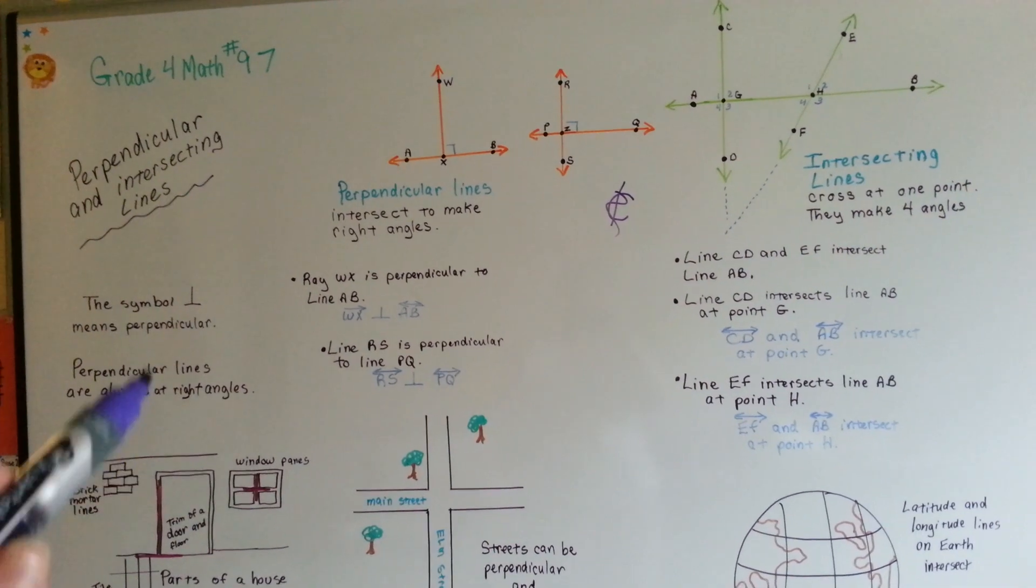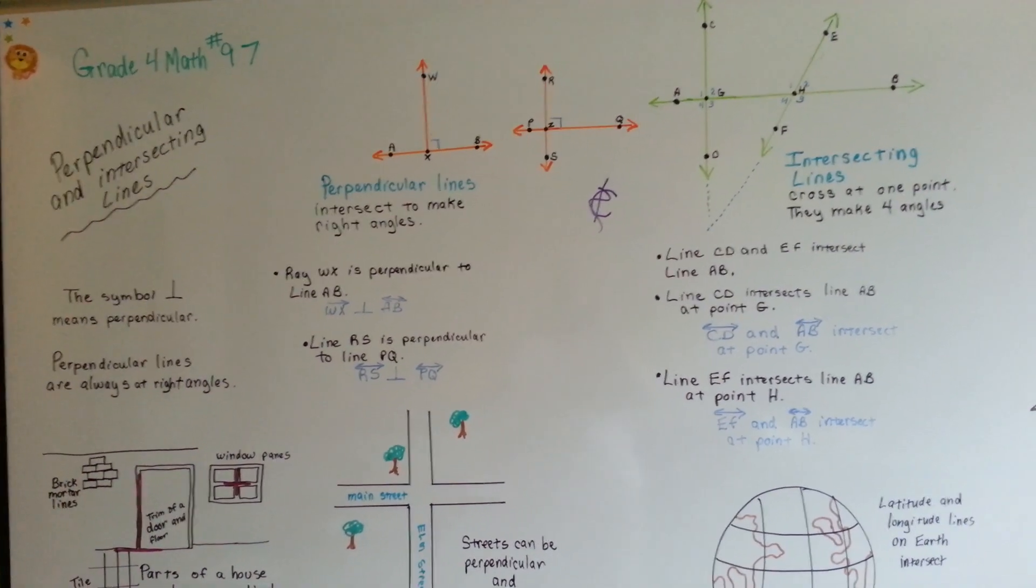And perpendicular's symbol is a little line, with a straight line going up.